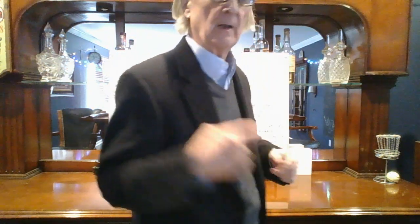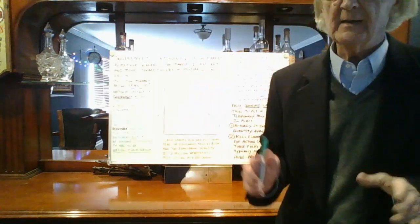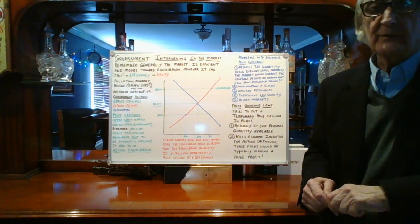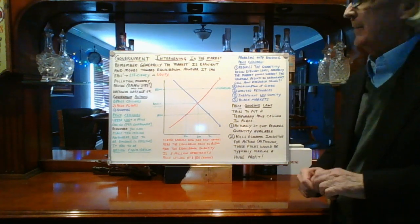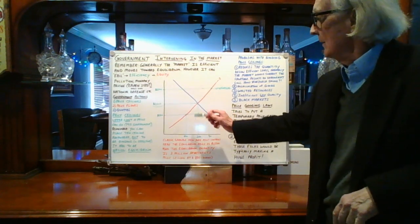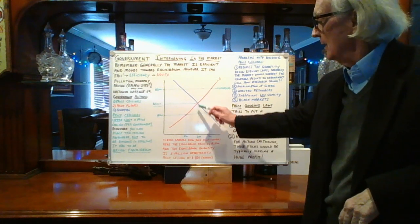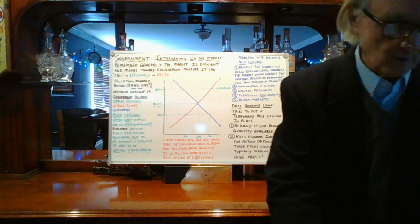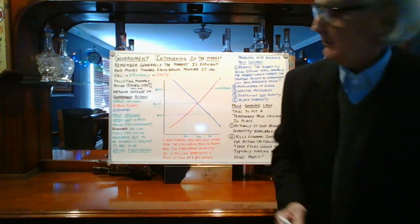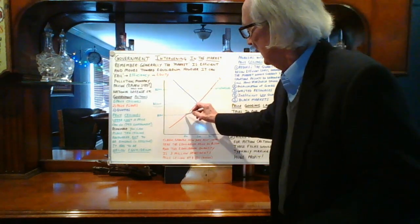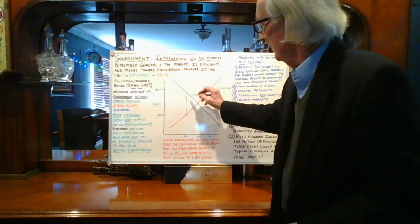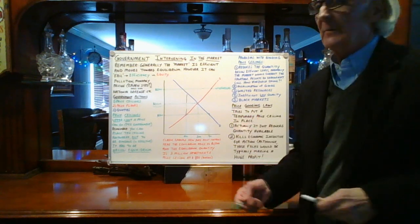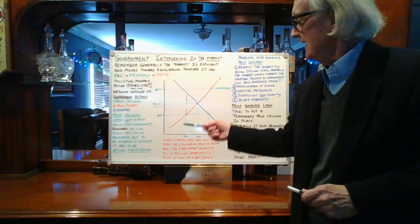What are the problems with the price ceiling? You'll need to remember these — this will be a big exam question. There are five basic problems with price ceilings. Number one: it reduces the quantity below efficient levels. The efficient level was 3 million; it reduces the quantity because that's all that's being offered — only 2 million. So here comes our black wedge — inefficiently low quantity. Normally the market would correct this, but in this case it can't because the government mandated it.